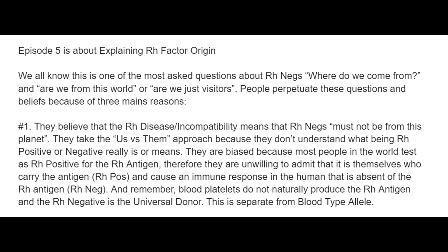And remember, blood platelets do not naturally produce the Rh antigen. The Rh negative is the universal donor. We can say O neg, but this is separate from blood type allele. It's important that we know the universal donor is Rh neg. The Rh positive cannot be the universal donor.